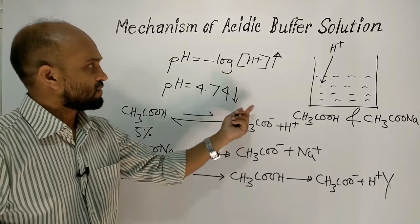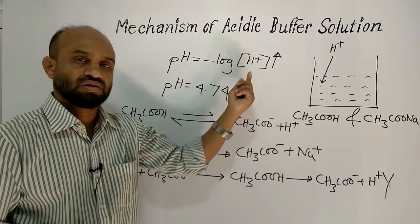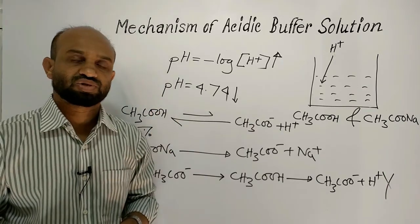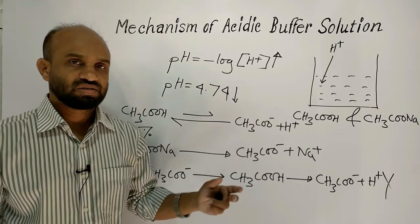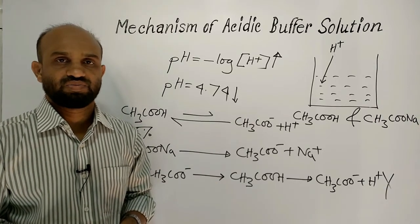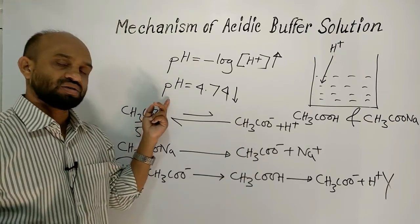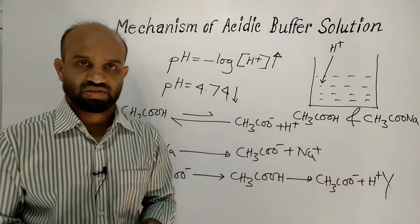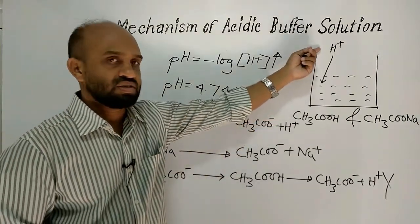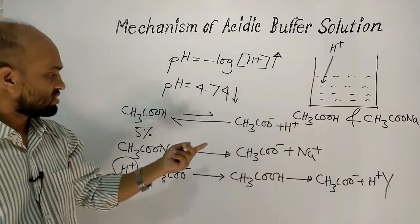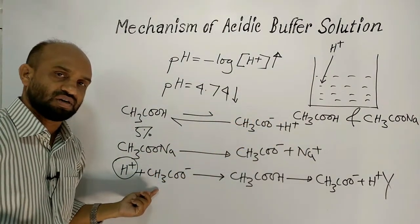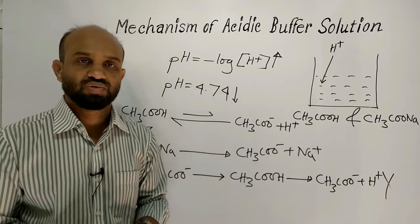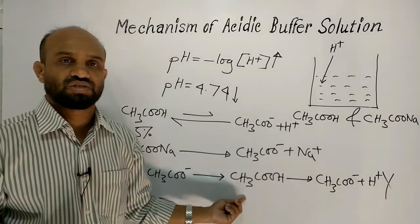That is why the concentration of hydrogen ion remains constant, and as a result the pH value remains almost unaltered. In short, acid added to the acidic buffer solution is consumed by the acetate ion to form acetic acid, which is a weak acid that doesn't produce protons again because of its weakness.